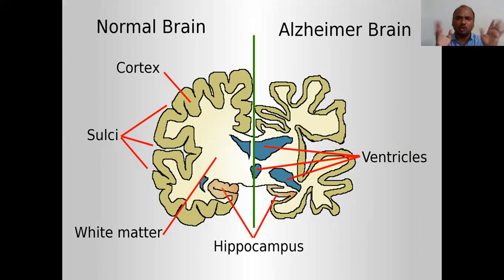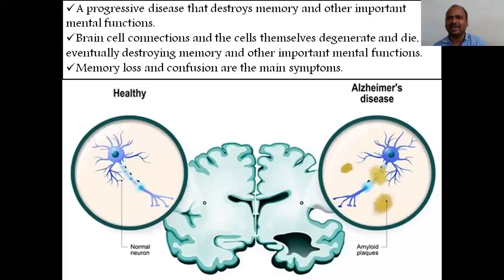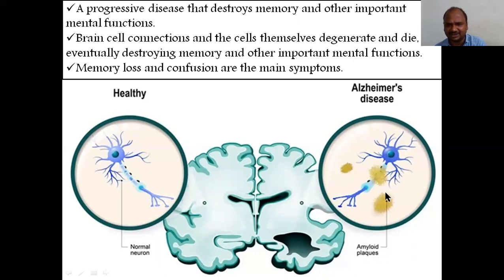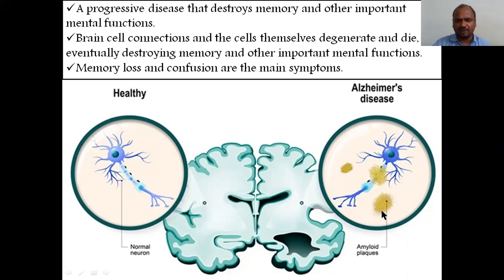It is a progressive disease that destroys memory and other important mental functions. Brain cell connections and the cells themselves degenerate and die. Here in the diagram you can find the amyloid plaques — these form in the Alzheimer's brain. This is a healthy neuron compared to one affected by amyloid plaques, showing how neurons are disrupted by the amyloid plaque formation.